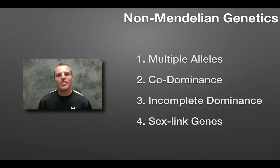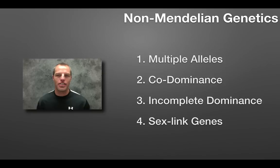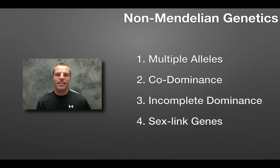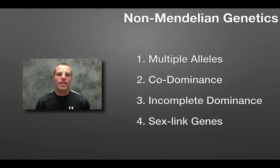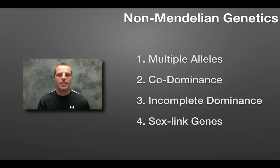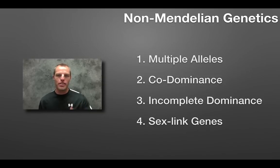Hey, this is Coach Boydston and in this screencast we're going to be looking at what we call non-Mendelian genetics. These are some situations in genetics that go against that dominant and recessive, just two alleles for one trait scenario that we talked about with Gregor Mendel and his pea plants. Let's take a look at a few of these.